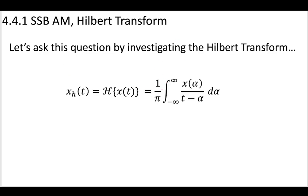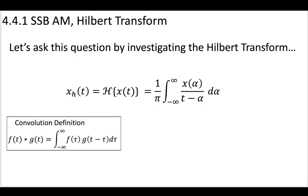We're going to define it as this integral from minus infinity to infinity of the function where we're integrating by this variable alpha. Looking at this, you might say to yourself that seems pretty familiar — and that's because this does look a lot like the definition of a convolution. We have an integral from minus infinity to infinity, and we've changed our variables to this tau variable.